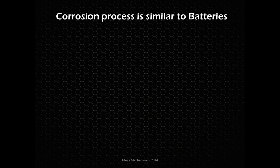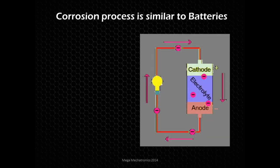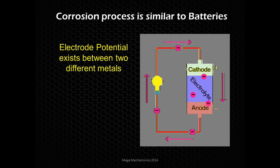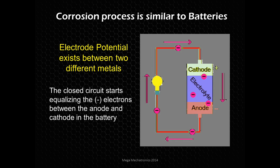The corrosion process we're going to look at is similar to batteries — that's actually what batteries are exploiting. We have an anode metal and a cathode metal separated by an electrolyte, and there is an electrode potential between those two different metals. When we close that circuit, we start equalizing the electrons — the anode has too many negative electrons and the cathode has too many positive ones. We harness that potential: the potential energy is the voltage, and the volume of electrons flowing is the amperage.